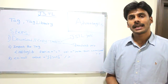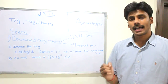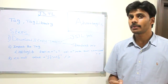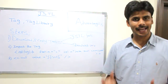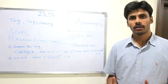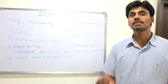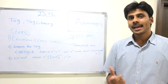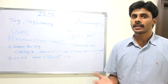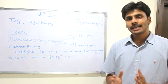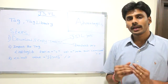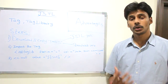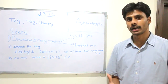JSTL stands for Java Standard Tag Library. A tag library is a collection of tags which does similar work, similar tasks. A tag is an XML element which, when you use it in your JSP page, can do a lot of work.